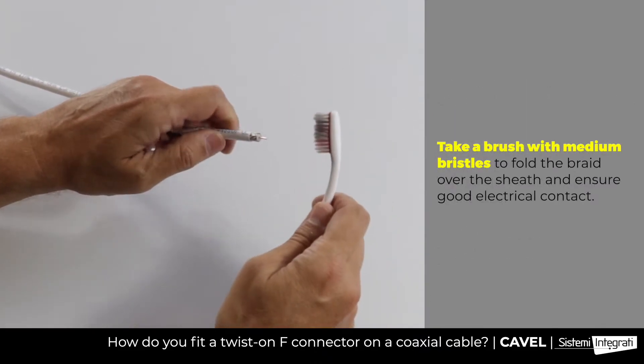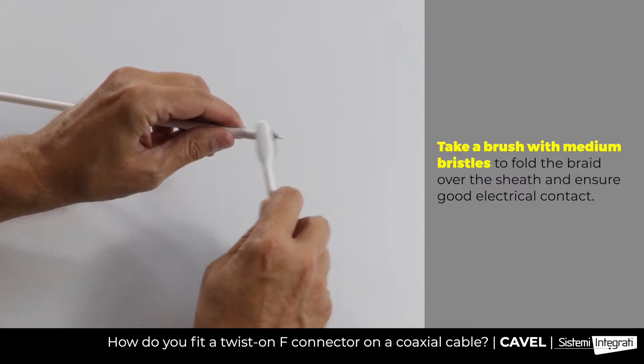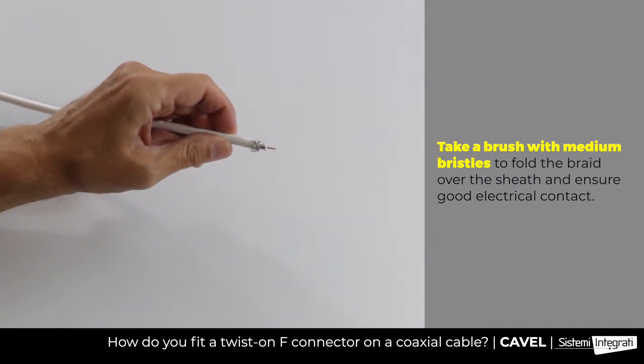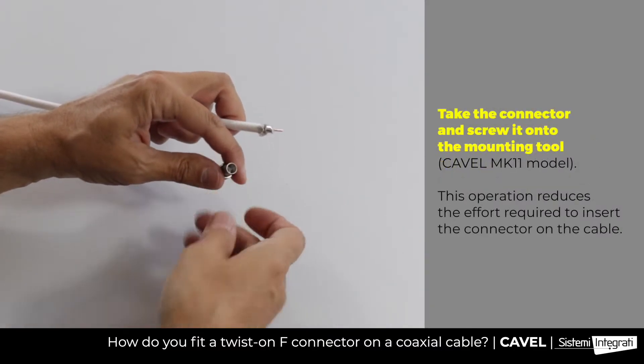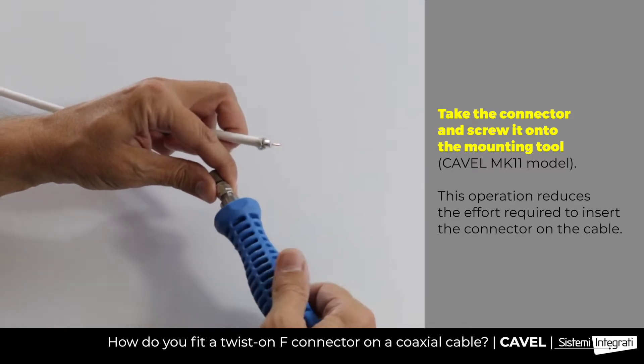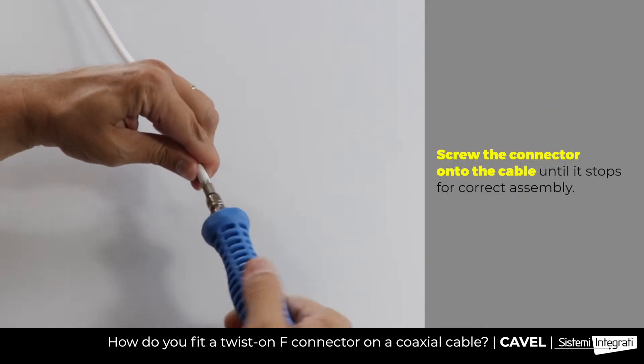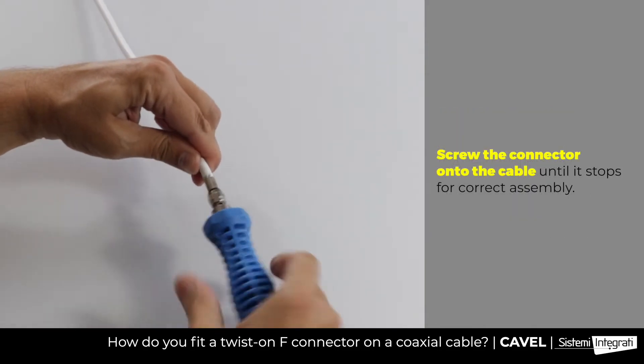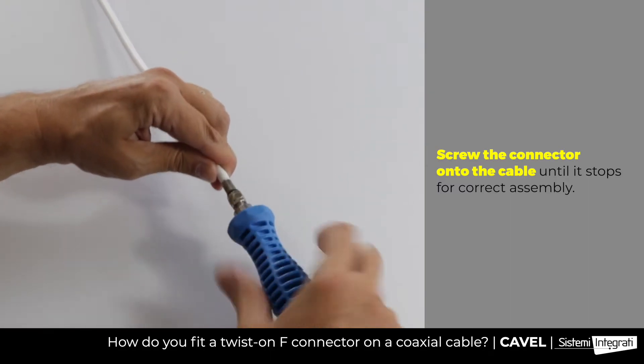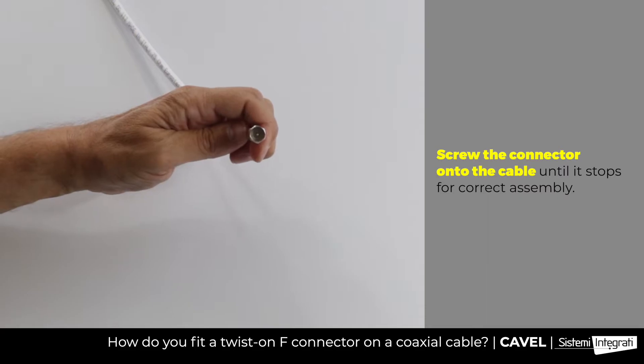Then, using a brush with medium bristles, fold the braid over the sheath. Take the FA703 twist-on connector, screw it onto the mounting tool, and then fit the connector by screwing it onto the cable until it stops. At this point, the connector has been correctly installed on the cable.